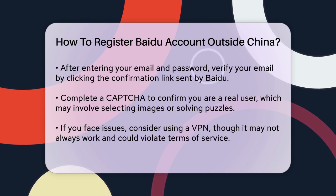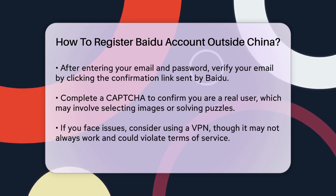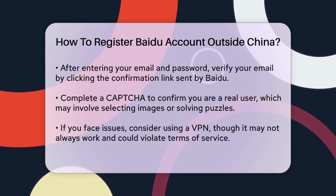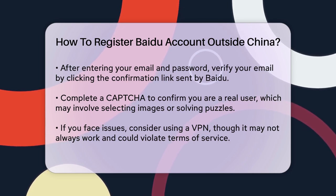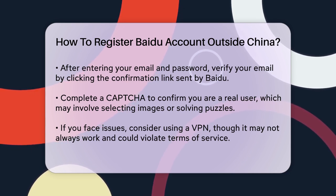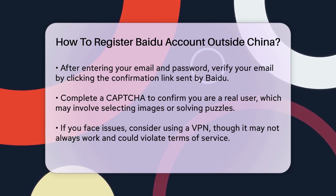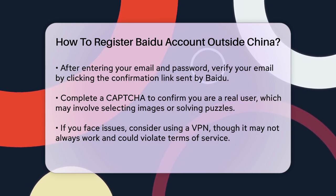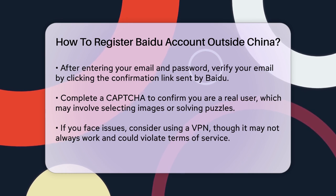If you encounter any issues during the registration process, such as language barriers or technical difficulties, you can try using a VPN (Virtual Private Network) to see if it helps. However, be aware that using a VPN might not always guarantee success and could potentially violate Baidu's Terms of Service.